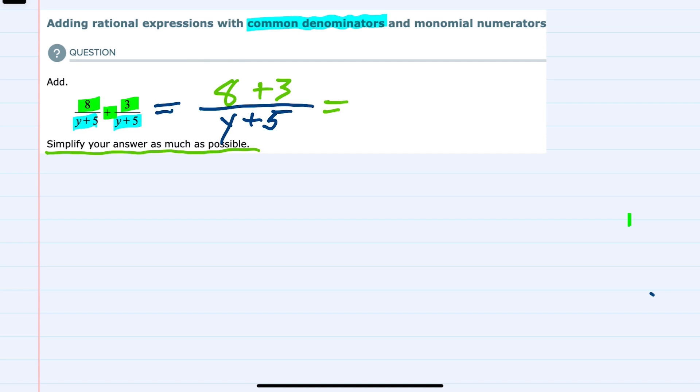The 8 plus 3, we can go ahead and do that addition. That's going to be 11 in the numerator. And there's nothing to simplify in the denominator. So I'll just bring that over. That's the y plus 5. Our simplified solution is 11 over y plus 5.